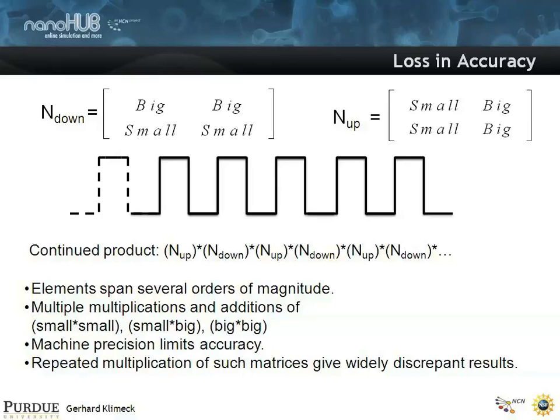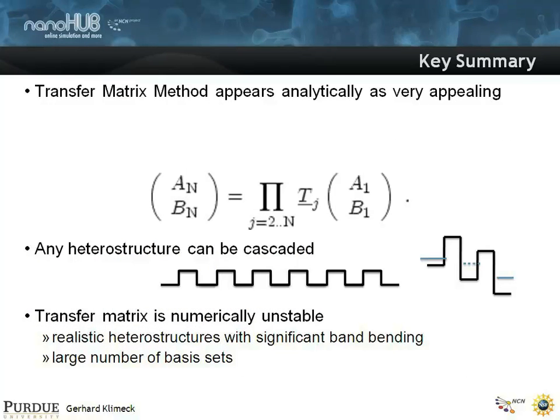So, transfer matrix is a beautiful thing for teaching quantum mechanics and scattering theory with a pencil and paper. Do not put it on a computer unless you know what you're doing. There's some correcting mechanisms and people have gotten their PhD around how to correct the transfer matrix for a certain application. For single band effective mass with a few layers like 80, 90 layers it's okay. But for a real device it probably is going to not do so well for you.